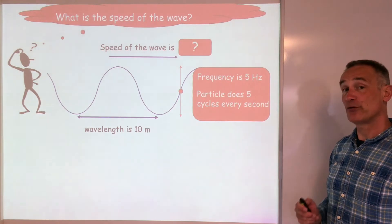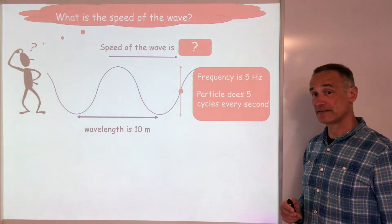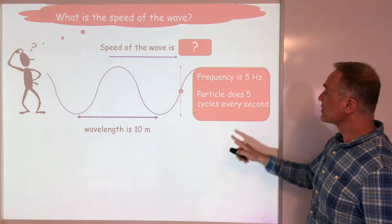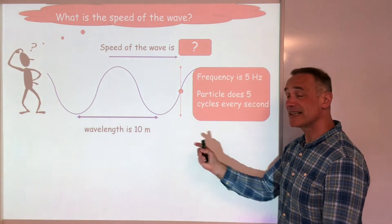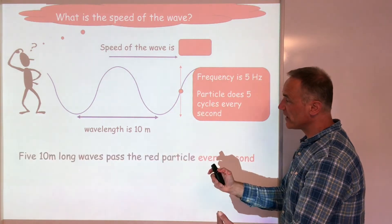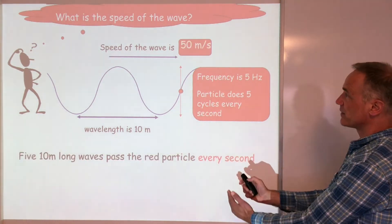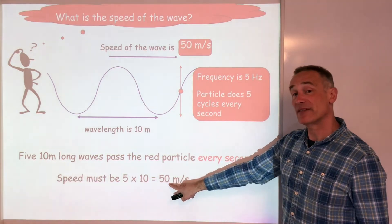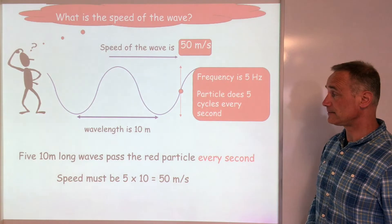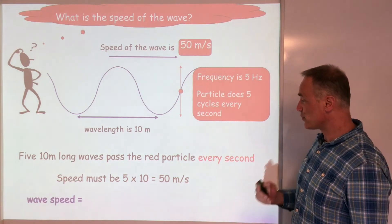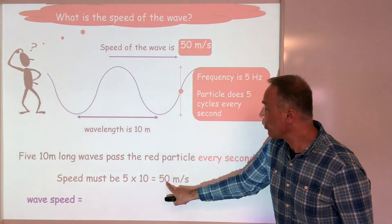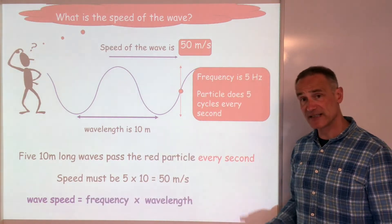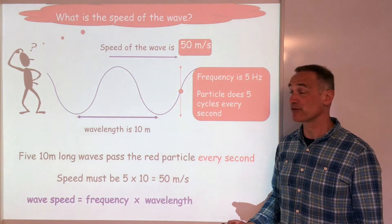Pause the video and have a go at the next one yourself. This time we've got 5 waves passing the point every second, each wavelength is 10 metres, so in total 50 metres of waves pass that point in 1 second — travelling at 50 metres per second. Notice on both examples, to work out the speed you've done frequency times wavelength. So that's the equation, and that's where it comes from — logic.